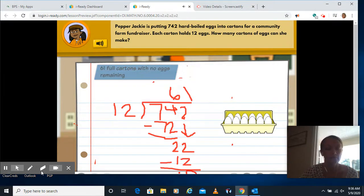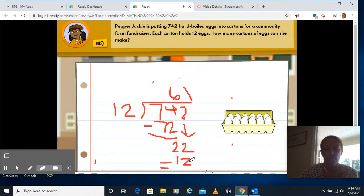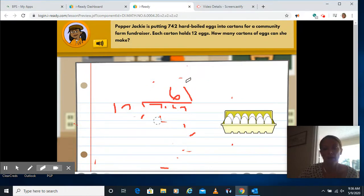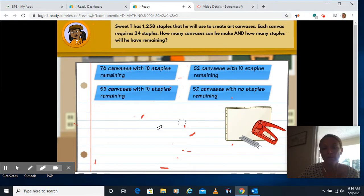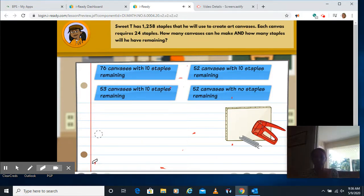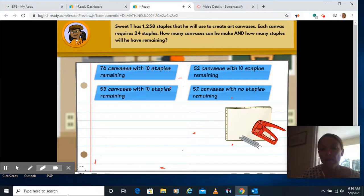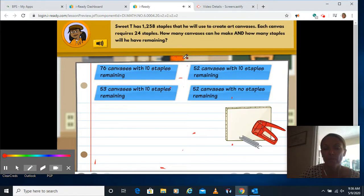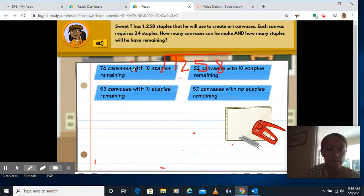Click done. And next. Erase. And I think we're on our last question here. Sweet T has 1,258 staples that he'll use to create canvases. Each canvas requires 24 staples. How many canvases can he make? And how many staples will we have remaining? So again, we're going to do 1,258 divided by the 24 staples.